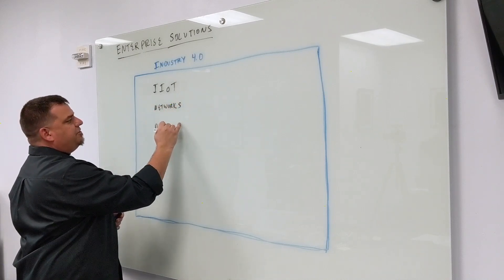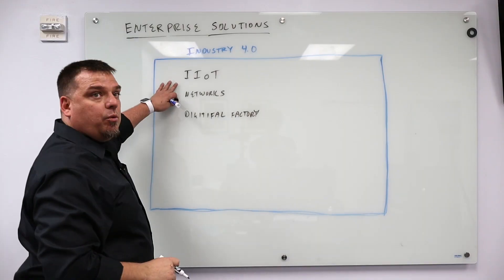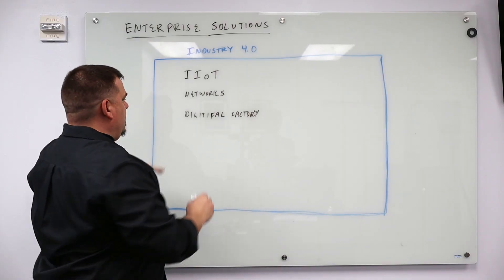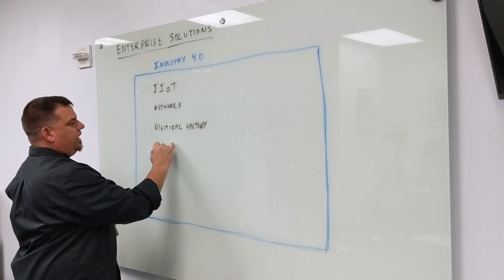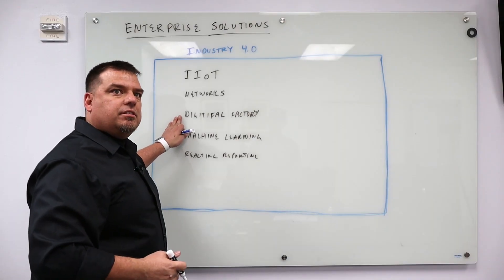The digital factory is a function of Industry 4.0. Because we have networks, because we have IIoT, because we have machine learning, because we have real-time reporting, we can build digital factories.